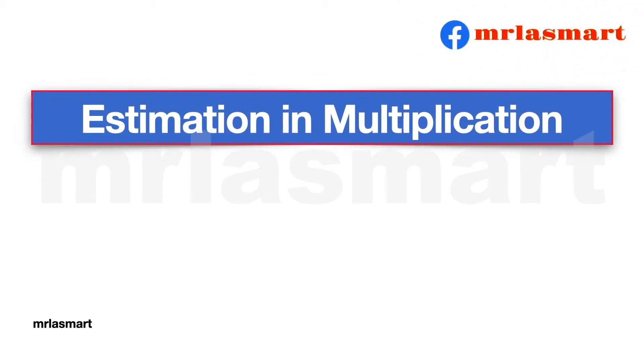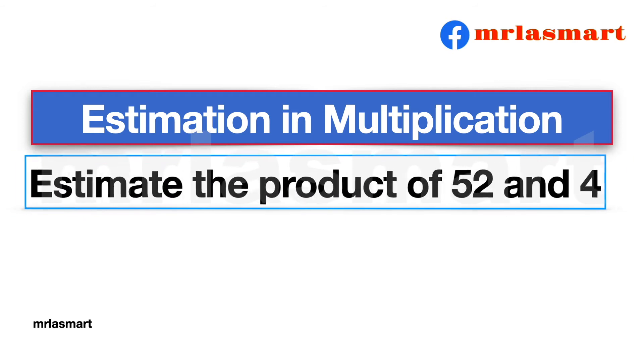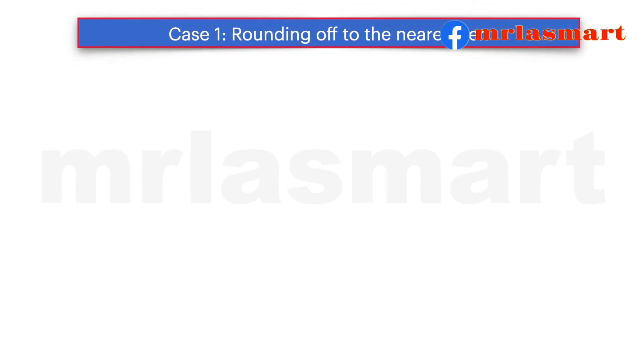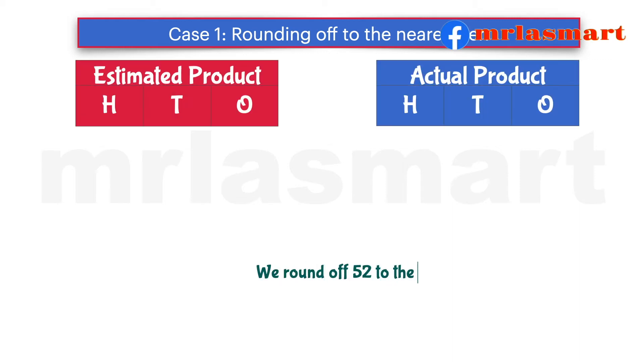Estimation and multiplication. Estimate the product of 52 and 4. Case 1, rounding off to the nearest 10. We round off 52 to the nearest 10, we get 50.